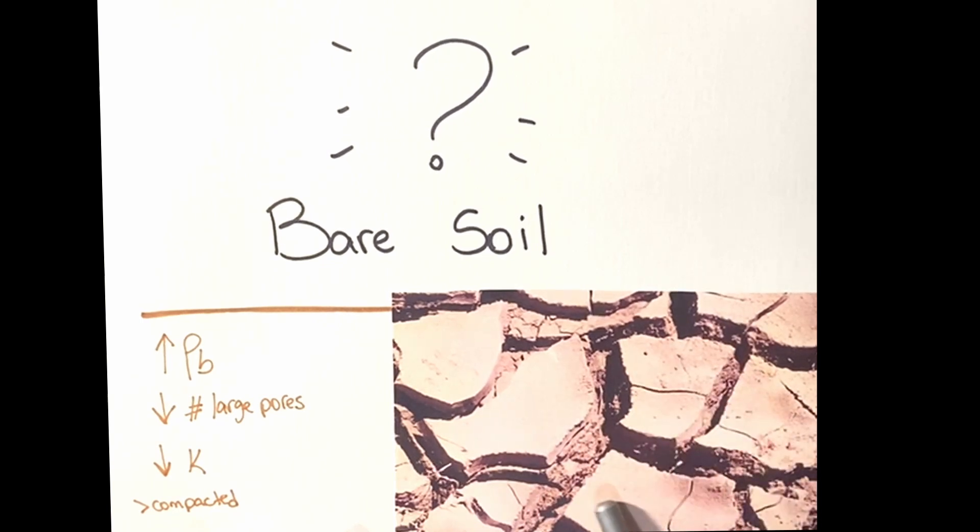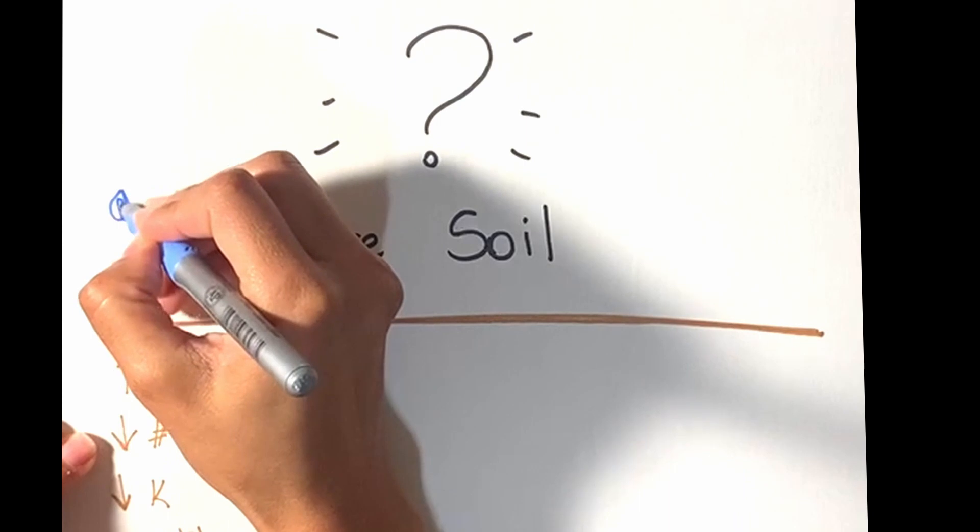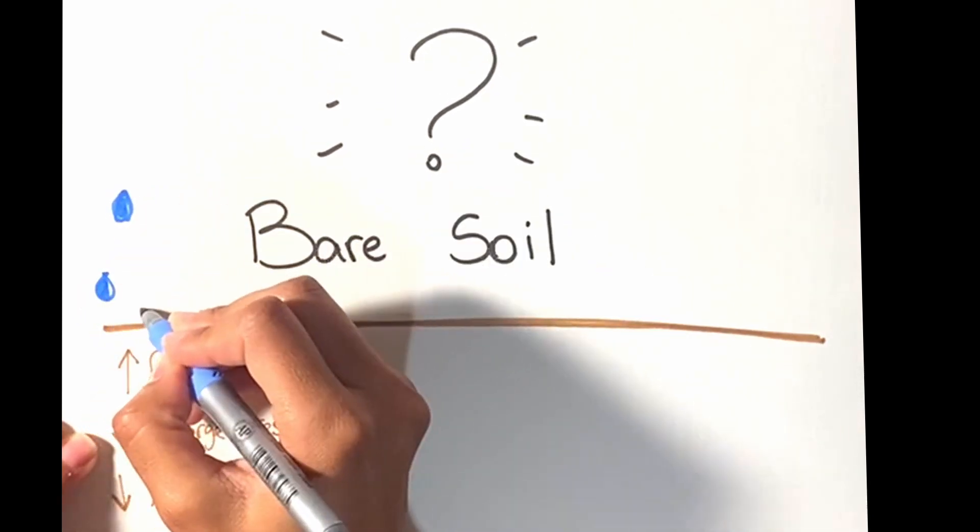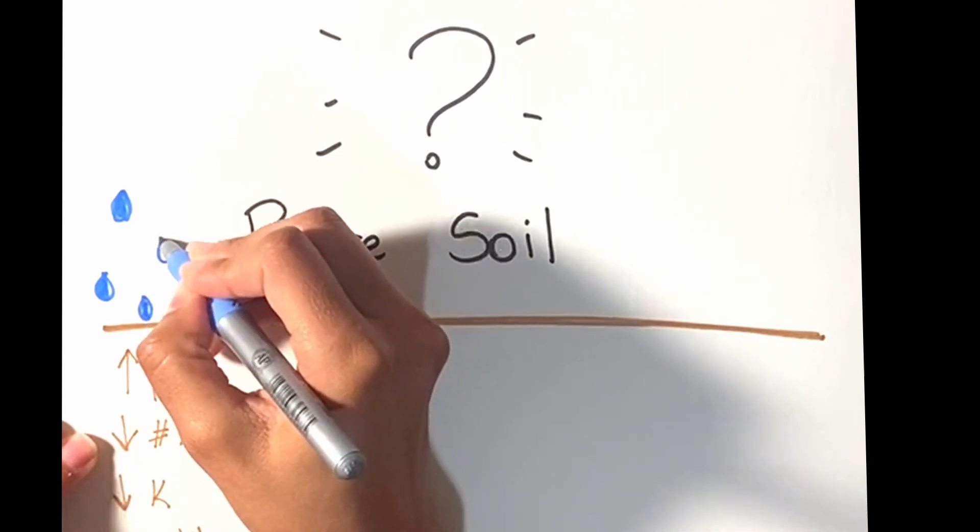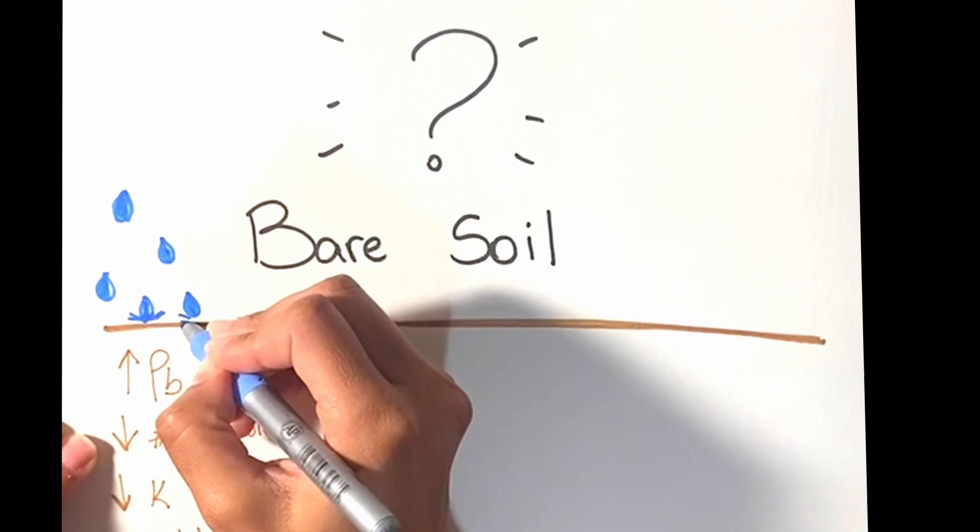As you can see in this picture, soil crust tends to look smooth and even when compared to freshly exposed soil. Rain impact on exposed soil is the main cause of soil crusting.